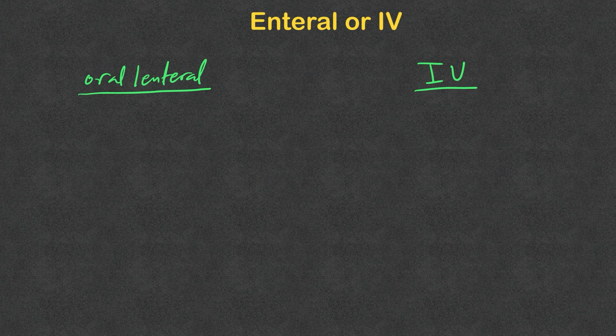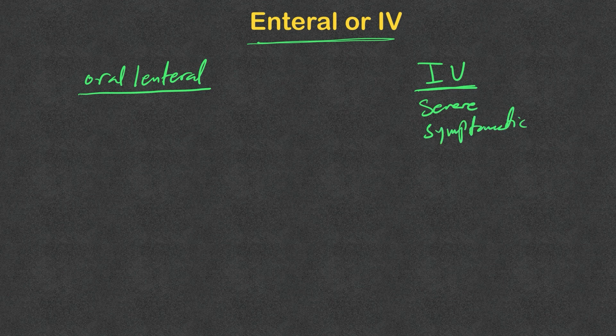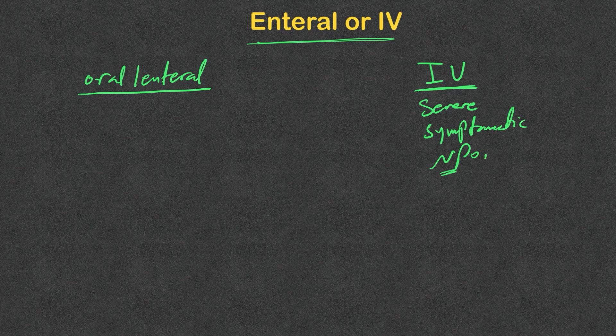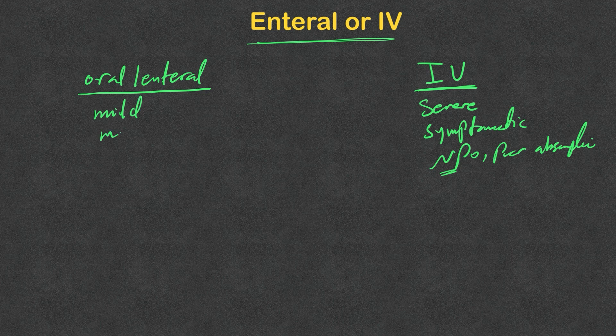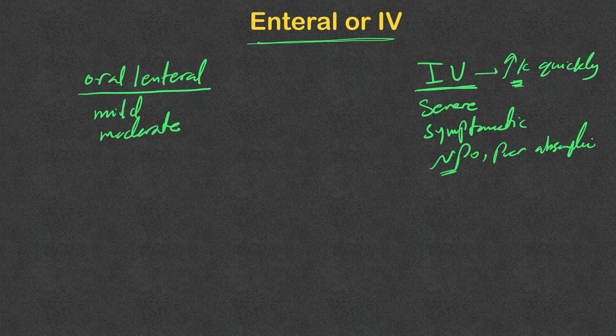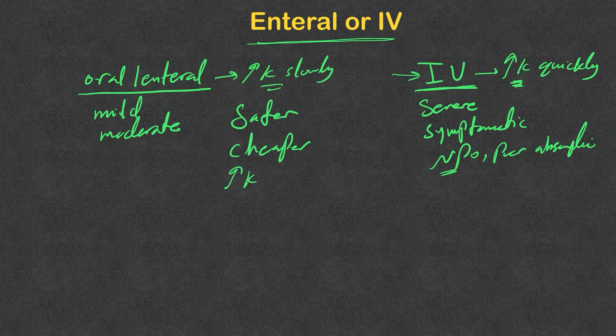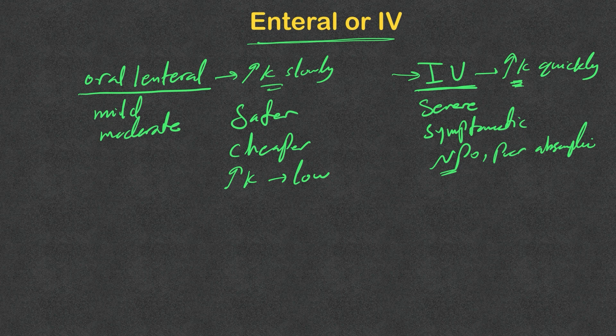The next question: do we give it orally or IV? IV potassium supplement should be reserved for severe hypokalemia cases or symptomatic hypokalemia cases, or if the patient is NPO or we cannot give it by mouth, or there is poor absorption like in shock status. For mild and moderate hypokalemia, we use only oral potassium supplements. IV raises potassium level quickly, and for that reason we cannot exceed certain rates with IV administration. I will discuss that soon. On the other hand, oral formulation raises potassium slowly. That makes oral potassium safer. It is also cheaper, and the risk of hyperkalemia is low, allowing us to give larger amounts of potassium without the concern of having rebound hyperkalemia.